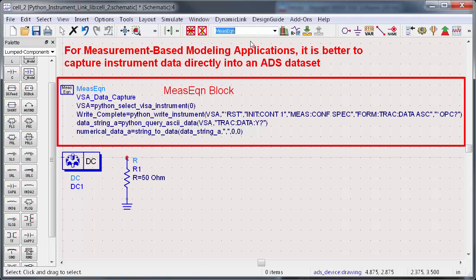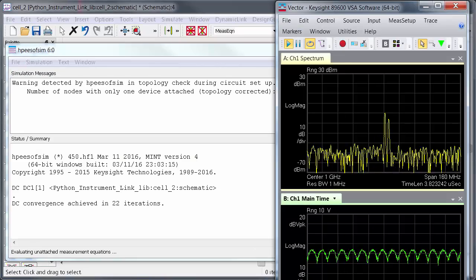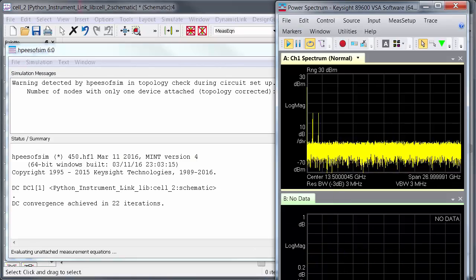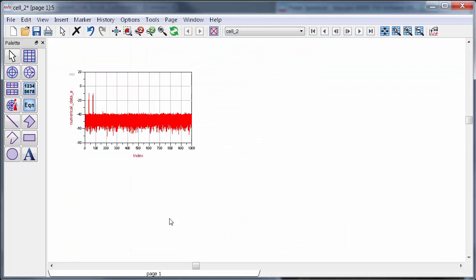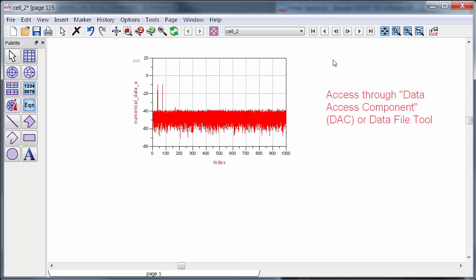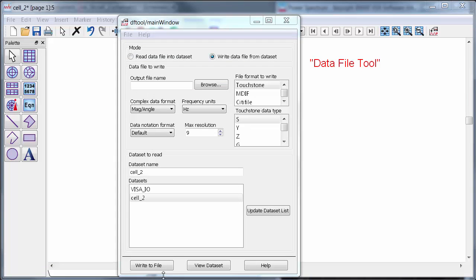To do that, just add a measurement equation block to any ADS simulation with these exact same equations that I just showed you. After the simulation completes, the instrument control will execute and the data will be permanently captured into an ADS data set. And you can even do a parameter sweep to capture multiple traces if you wanted to. Then you can access your data in another simulation using a data access component block in ADS, or you can convert the data set into a standard modeling format using the data file tool.